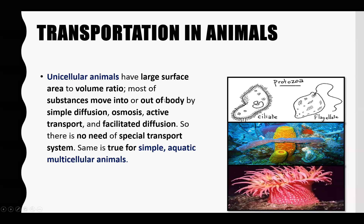First of all, we will discuss unicellular animals, then we will discuss simple multicellular animals, and then we will discuss complex animals, and we will see what transport systems are in them.